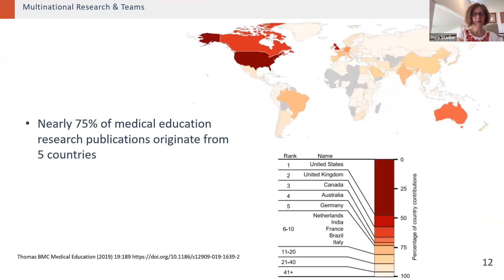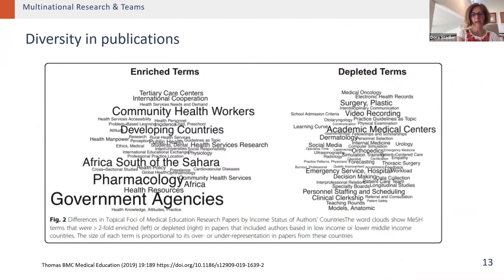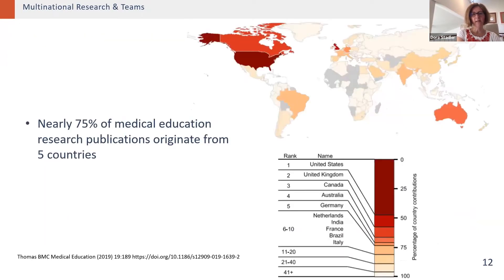Another study looks not at the site of the journal but the origin of the publication, showing that nearly 75% of medical education research publications originate from five countries: the United States, United Kingdom, Canada, Australia, and Germany — again showing how these are slanted.